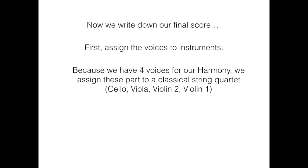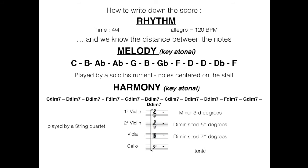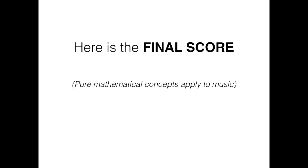Now we write down our final score. First, assign the voices to instruments. Because we have four voices for our harmony, we assign these parts to classical string quartet. We have the rhythm, and we know the distance between the notes. We have the melody in a tonal key with the twelve notes we found, and we have the harmony with the two loops of the six chords we found. Here is the final score. Pure mathematical concepts apply to music.